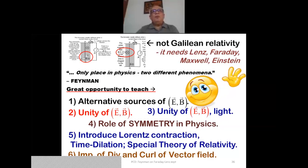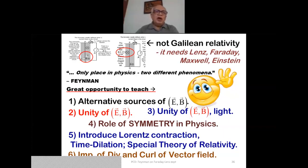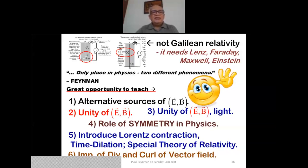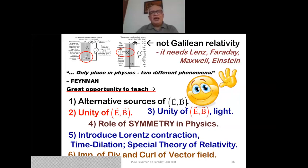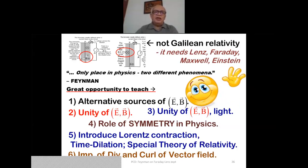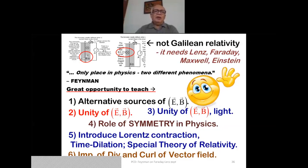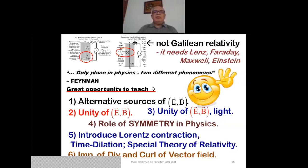In the first experiment you have the Lorentz law; in the second, the Lenz-Faraday-Maxwell equation. This gives us a beautiful opportunity to discuss: alternative sources of the electromagnetic field helping us appreciate Maxwell's equations in matter; the unity of the electromagnetic field and its unity with optics; the role of symmetry and Noether's theorem; the constancy of the speed of light, time dilation, and Lorentz contraction; the importance of divergence and curl of the vector field, the Helmholtz theorem, and the uniqueness theorem. We should make absolutely no apology for using mathematics — as Wigner said, the unreasonable effectiveness of mathematics in natural sciences is a wonderful gift we neither understand nor deserve.